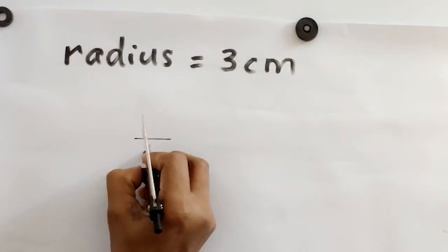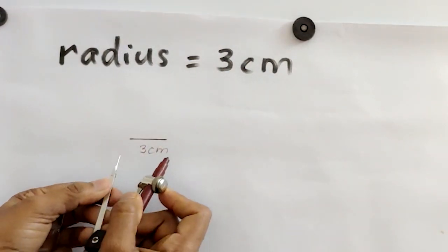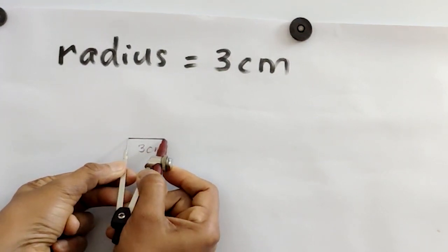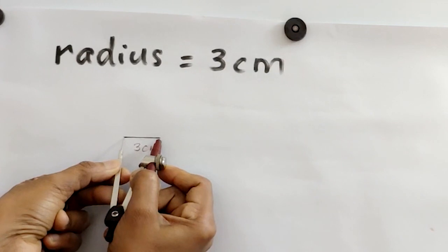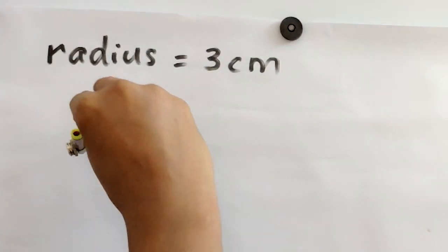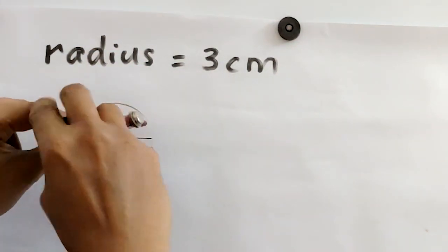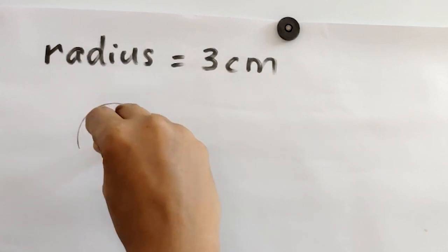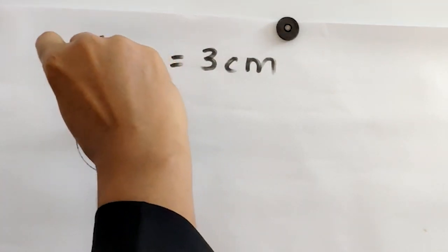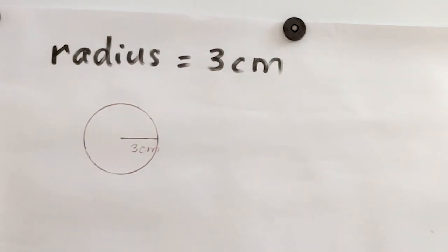For a radius of 3 cm, first draw a line segment of 3 cm starting from 0. Then keep the metal tip on one end and the pencil tip on the other end. Be careful while drawing, and draw a circle. The circle will pass through the other end of the radius. This is a circle of radius 3 cm.